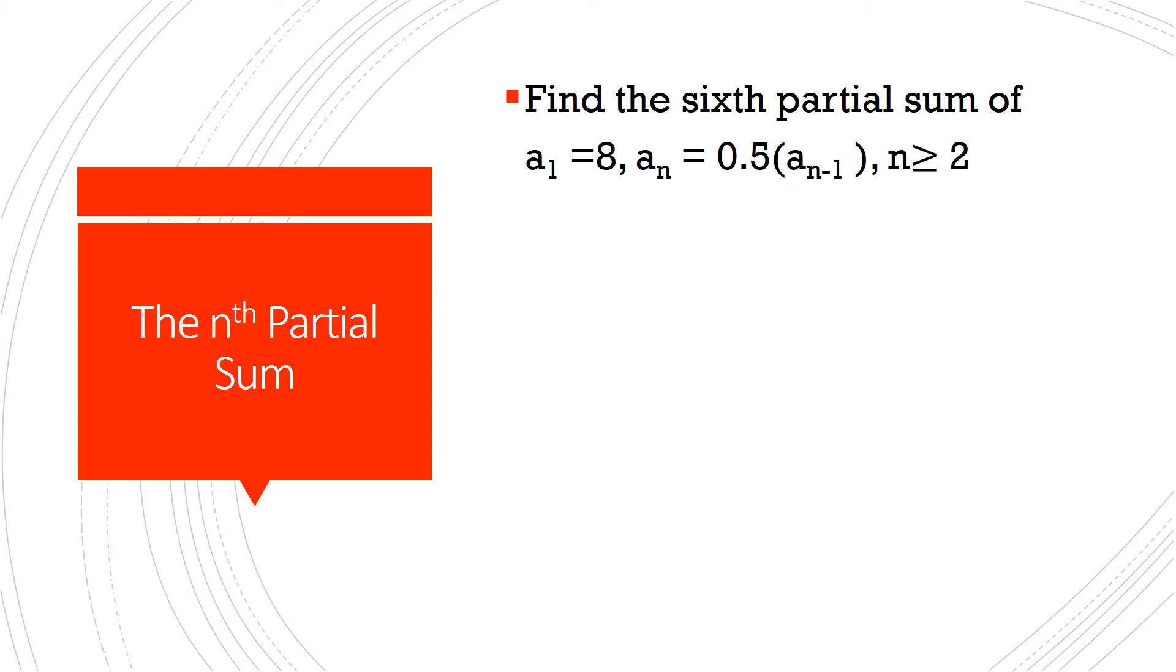We start off by finding, we're asked to find the sixth partial sum of when a1 is equal to 8, and our formula is a_n equals 0.5, or 1 half, a_(n-1), where n is greater than or equal to 2. We know what a1 is. a1 is 8.